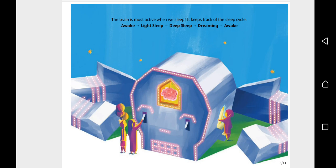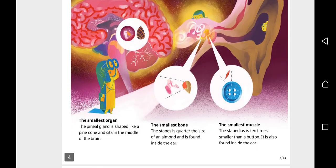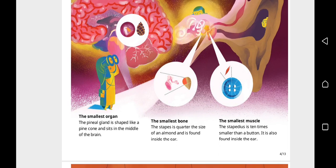The smallest organ, the pineal gland, is shaped like a pine cone and sits in the middle of the brain. The smallest bone, the stapes, is a quarter the size of an almond and is found inside the ear. The smallest muscle, the stapedius, is ten times smaller than a button. It is also found inside the ear.